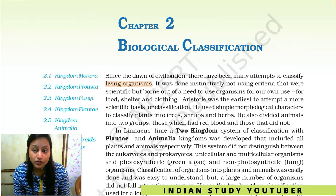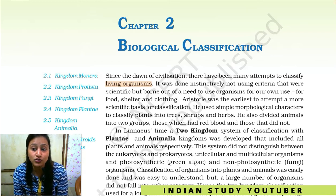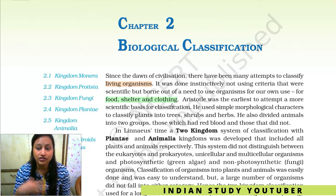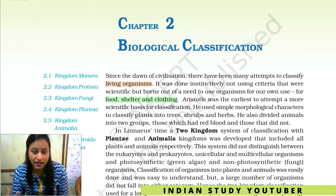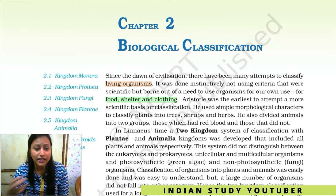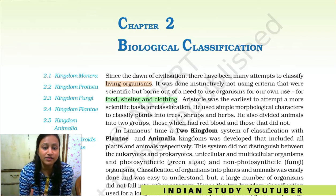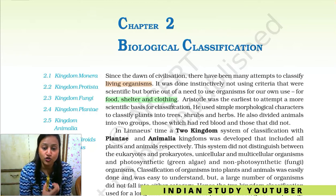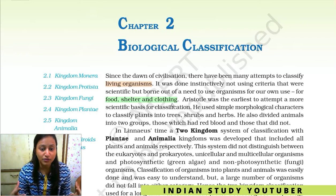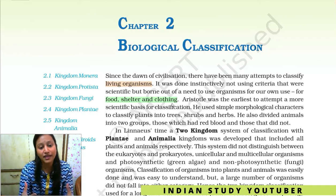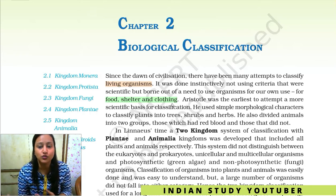Classification was done instinctively, not using criteria that were scientific, but born out of need to use organisms for our own use — for food, shelter, and clothing. When we started to classify them, there was no scientific criteria. At that time, there was no concept of kingdoms, no animal category, no plant category — nothing like that in our mind. We classified organisms based purely on practical use.